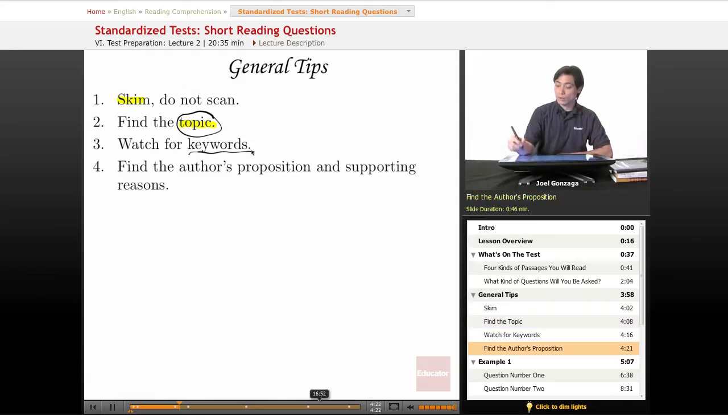Likewise, when you're watching for these keywords, don't forget to highlight major supporting details or minor supporting details or anything that's happening there. The other important thing you have to watch out for is find the author's proposition and his supporting reasons. This is especially important when you're reading a science one or a social sciences one.